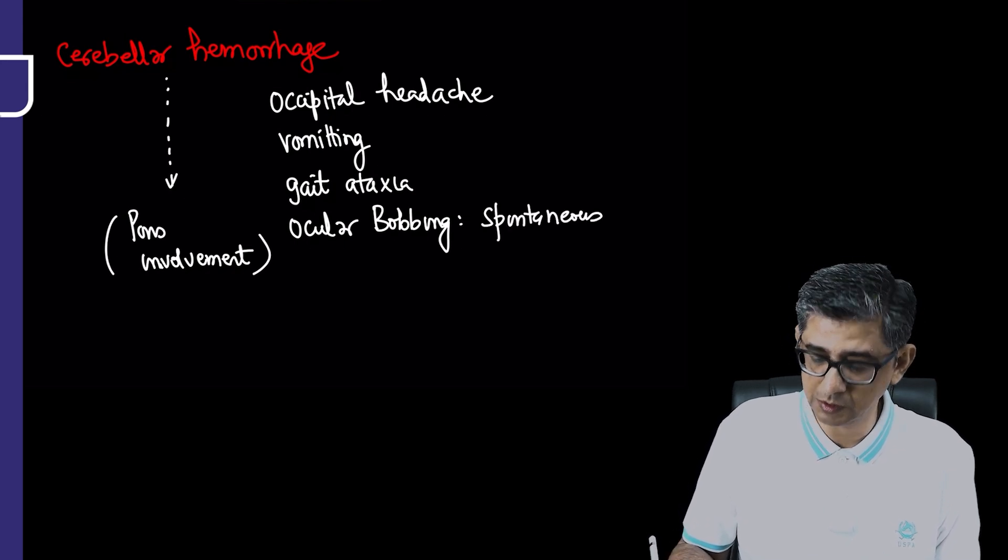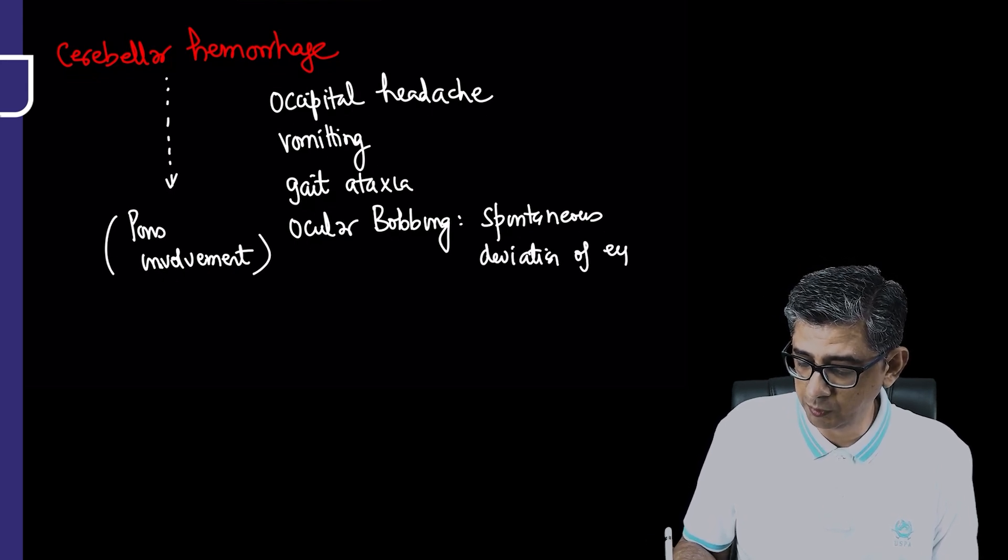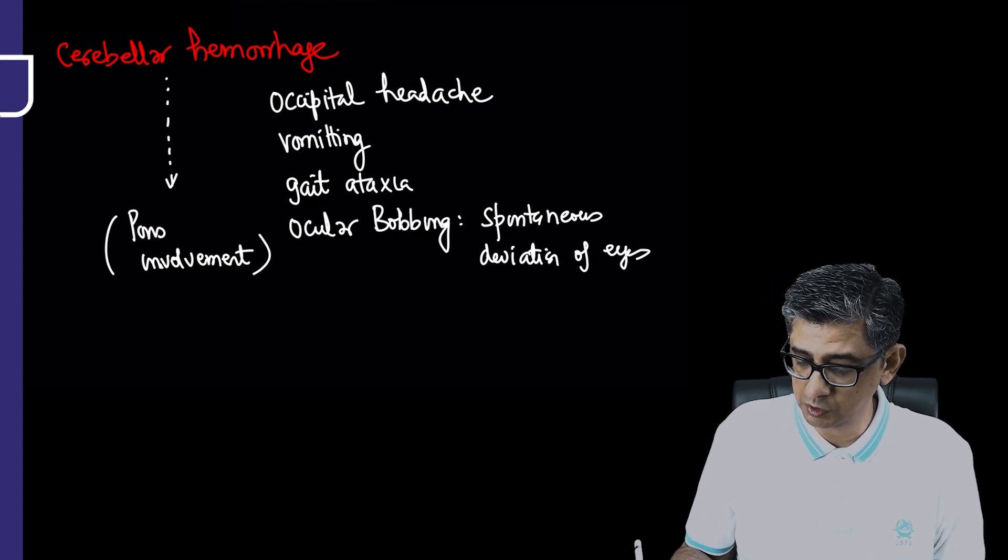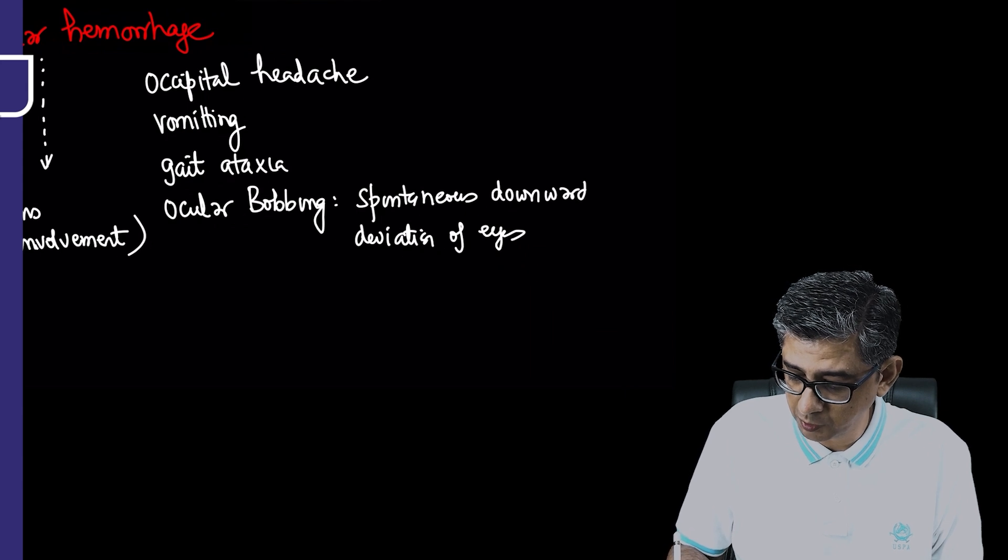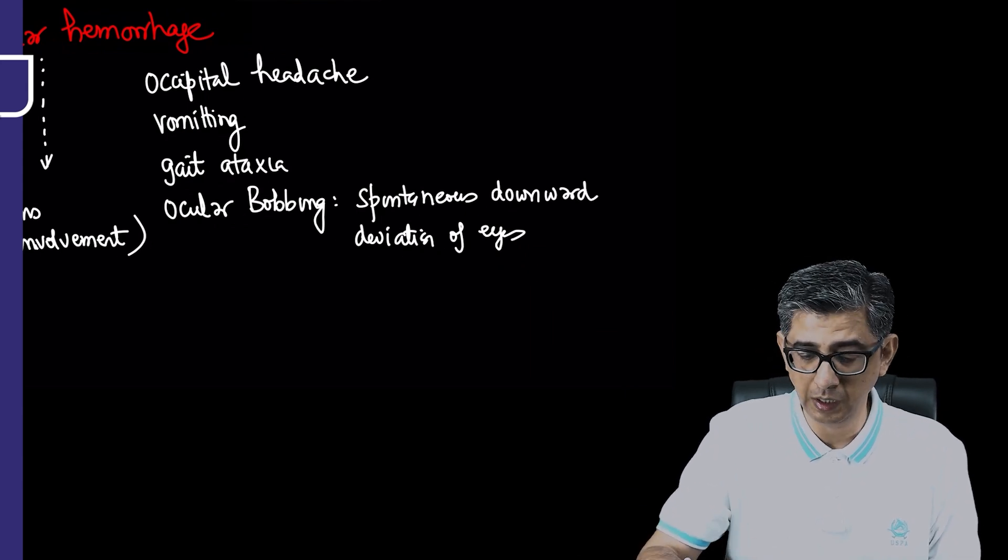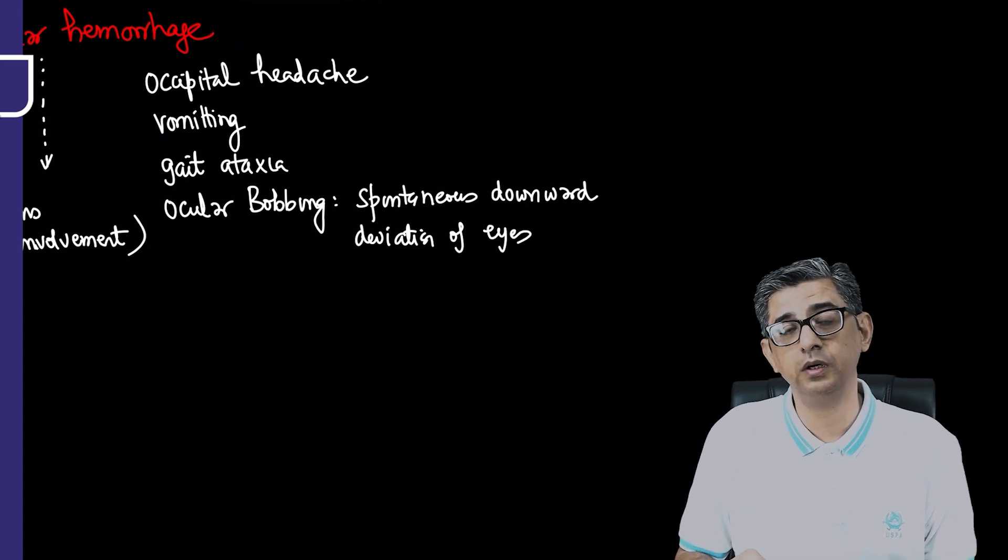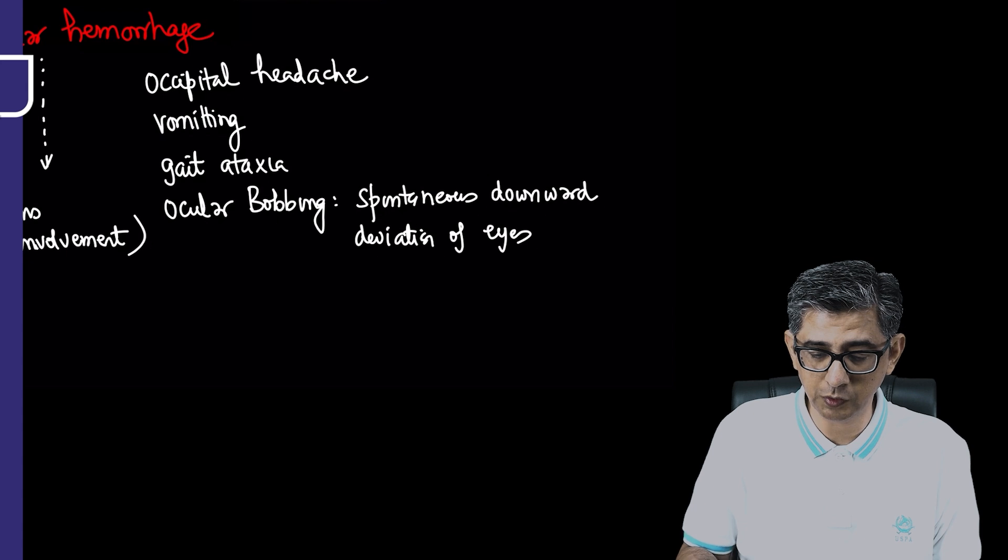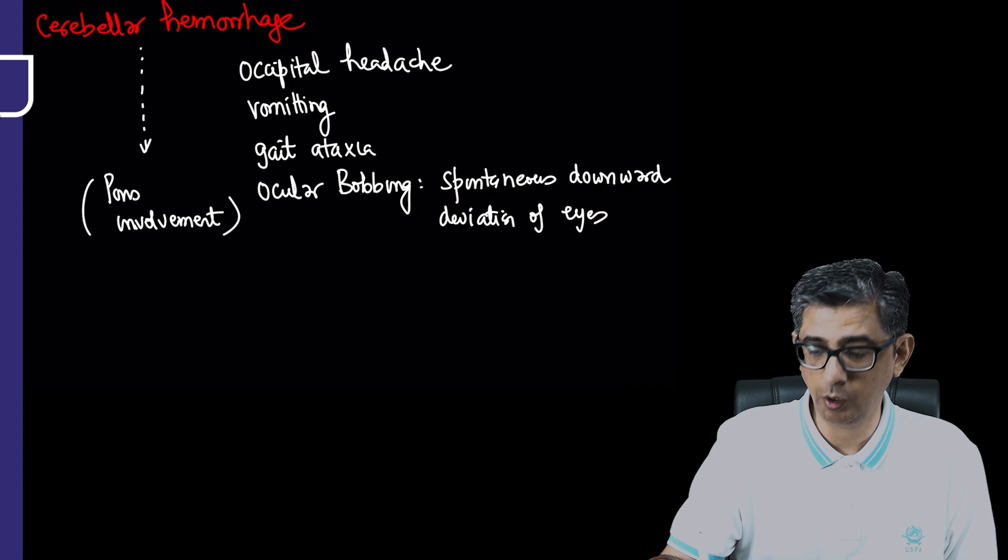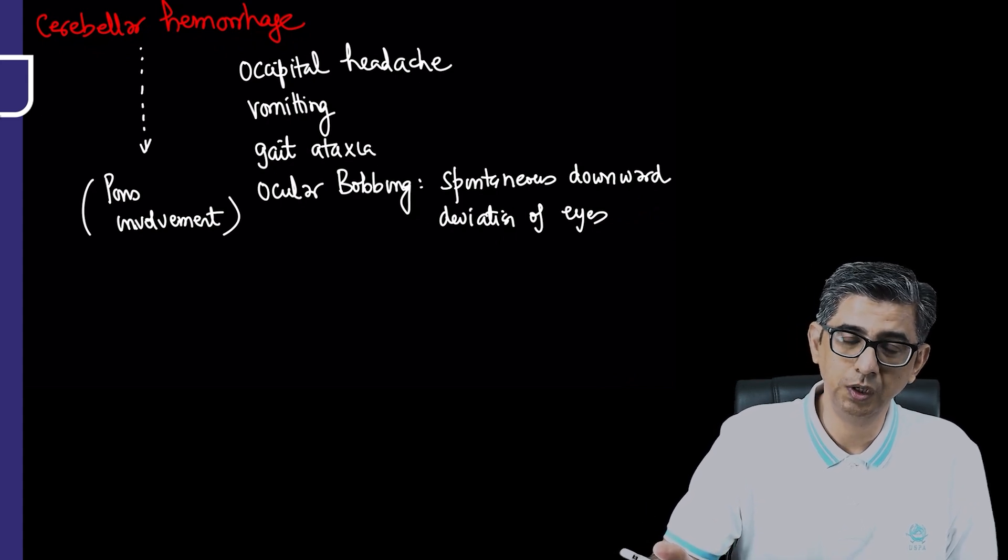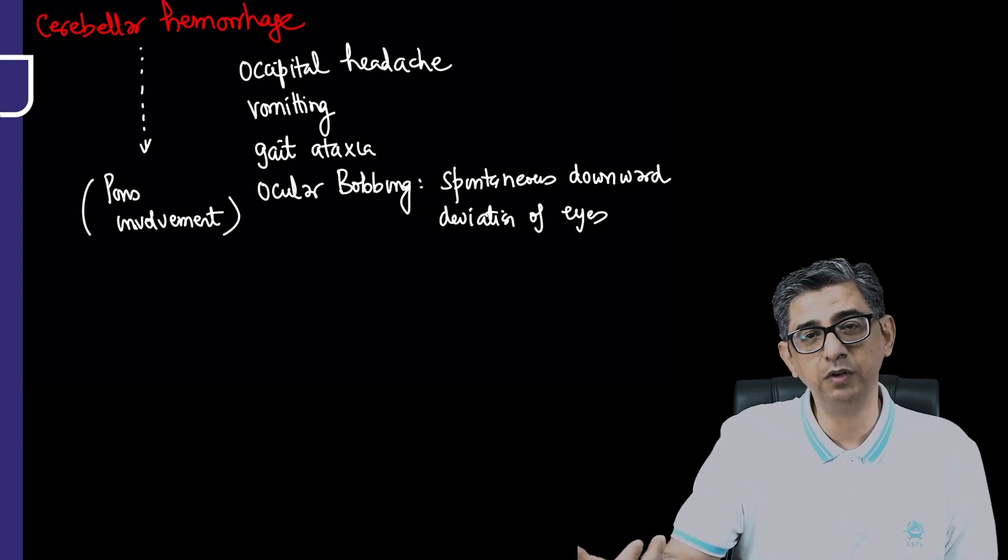Ocular bobbing should not be mixed up with downbeat nystagmus. In the MCQ they'll trouble you with terminology. This is spontaneous downward deviation of both eyes, mainly due to pontine involvement. Don't mix it with downbeat nystagmus—the eye movement is different. In ocular bobbing it's downward movement, whereas in downbeat nystagmus it's upward movement. Ocular bobbing is spontaneous downward deviation due to pontine involvement.